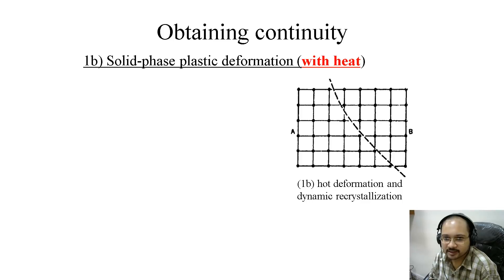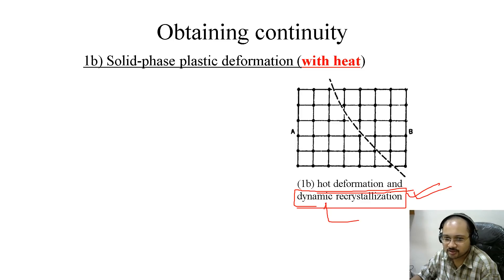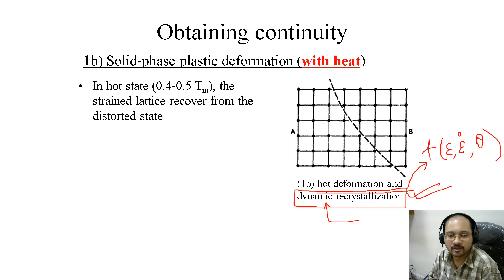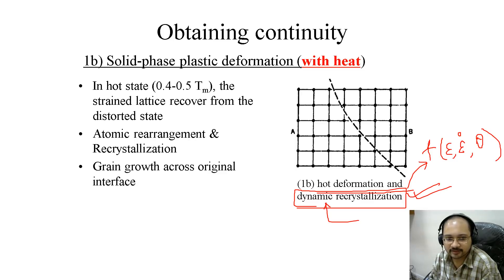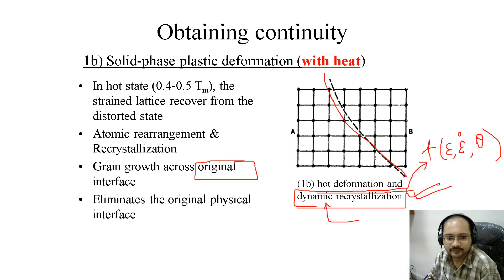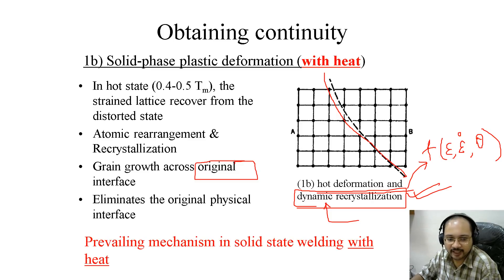With solid phase plastic deformation with heat, there is hot deformation and dynamic recrystallization. Recrystallization depends on dynamic parameters such as strain, strain rate, and temperature — so recrystallization is a function of strain, strain rate, and temperature (θ). In the hot state, at about 40 to 50 percent of Tm, the strain is recovered from the distorted state. There is atomic rearrangement, recrystallization, and grain growth across the original interface, which eliminates the original physical interface. This is the prevailing mechanism in solid state welding with heat.